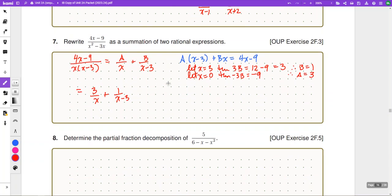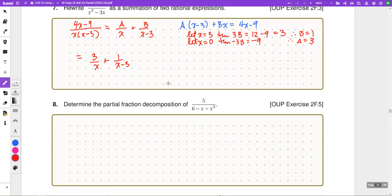Let's look at number 8. Determine this partial fraction decomposition. We have our numerator. Factor our denominator. I'll have a 3 plus x and a 2 minus x. That's going to be a negative 3x plus 2x. A 3 times 2 is a positive 6. So, that would work. It's quadratic. So, we're going to have two terms to consider.